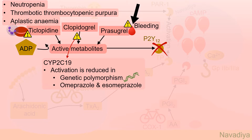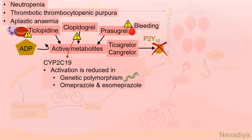Prasugrel is contraindicated in patients with a history of transient ischemic attack or stroke due to the risk of bleeding. Ticagrelor and cangrelor are other drugs in this group. They are active and reversible inhibitors, in contrast to ticlopidine, clopidogrel, and prasugrel which are pro-drugs and irreversible inhibitors.